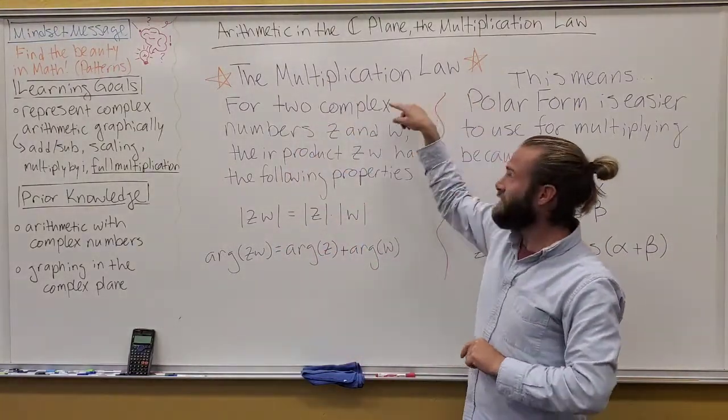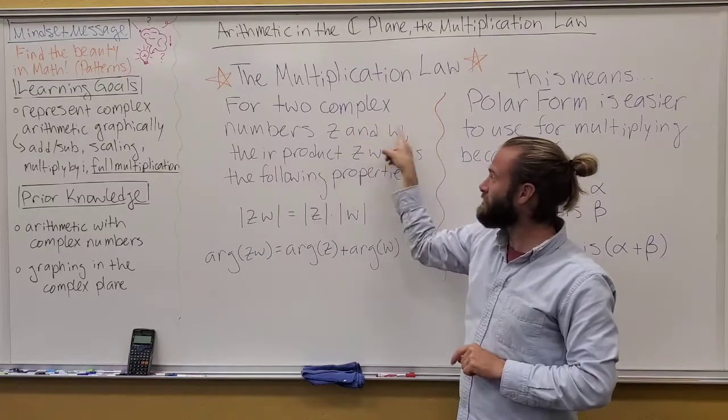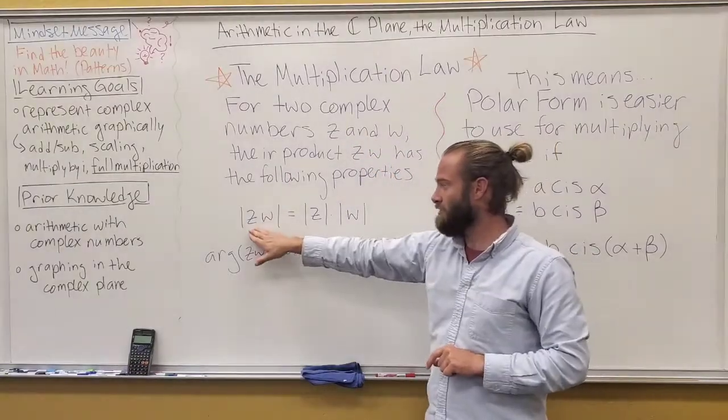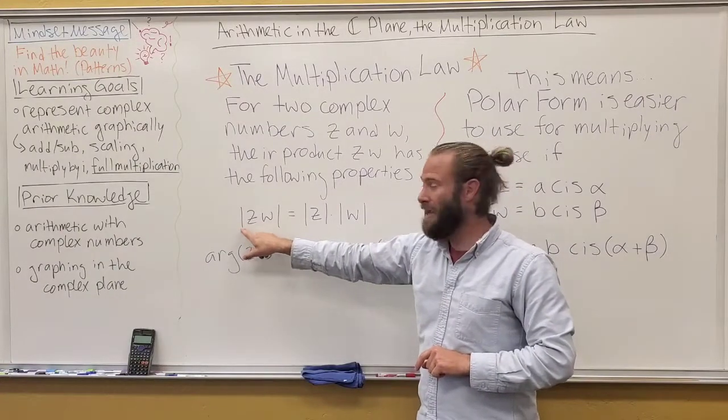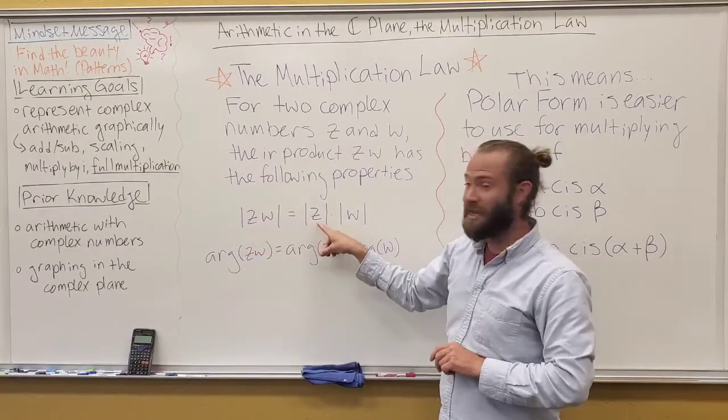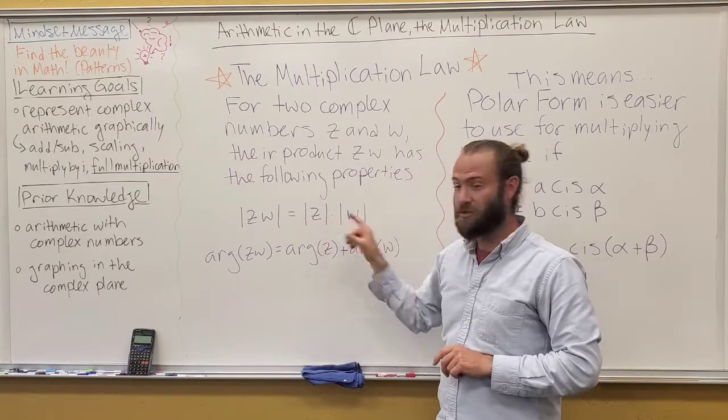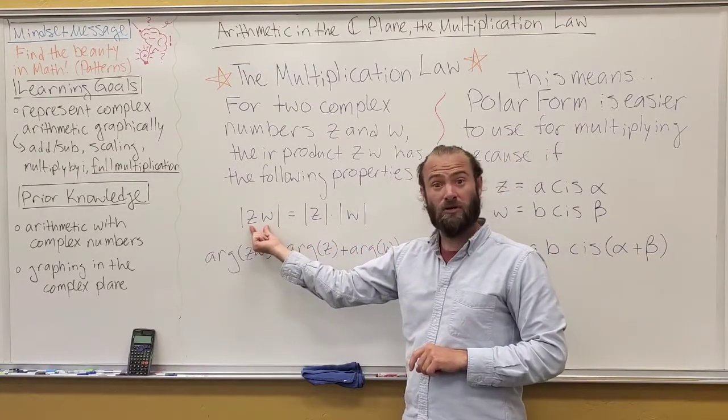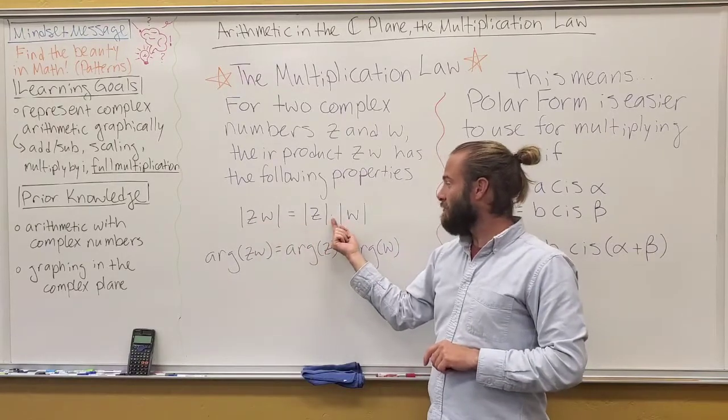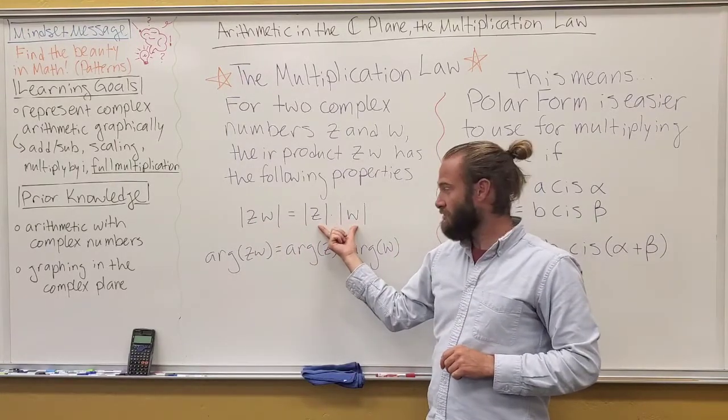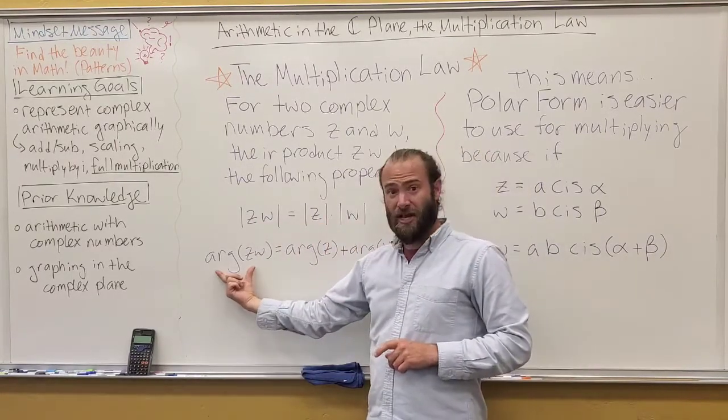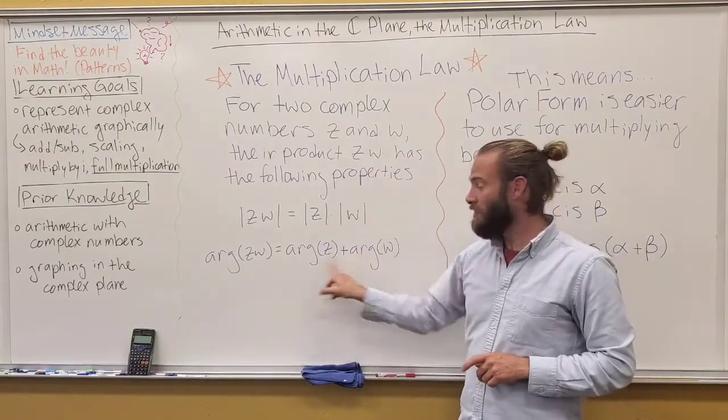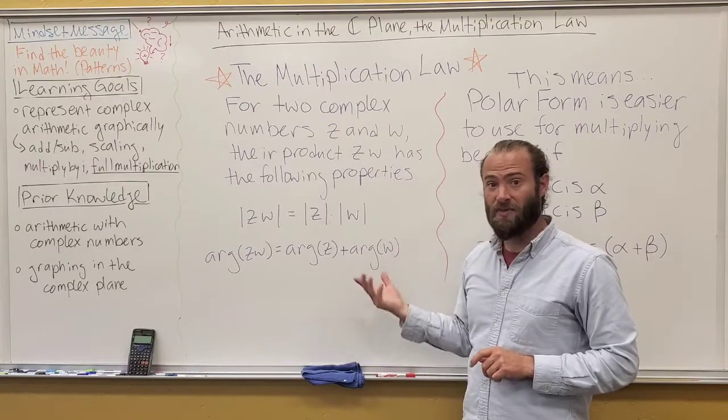The multiplication law states for two complex numbers Z and W, their product ZW has the following properties. The magnitude of ZW is the same as the individual magnitudes multiplied, right? So the magnitude of the product, in words, is the product of the magnitudes. But the direction angle, the argument, the argument of the product is actually the sum of the separate angles, or the sum of the arguments.